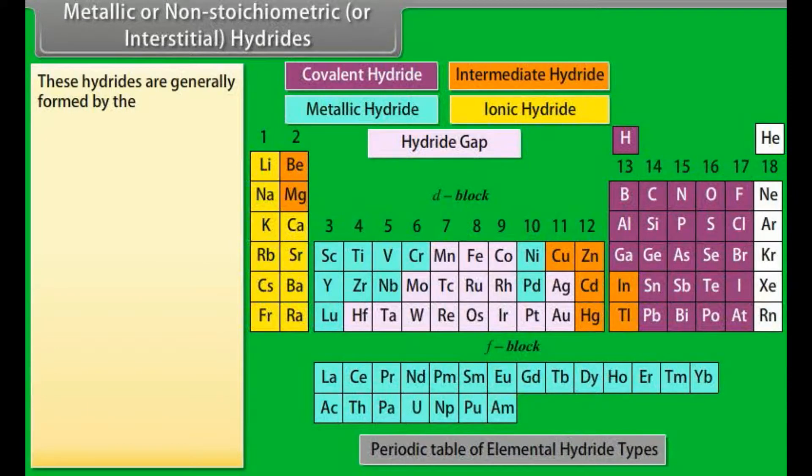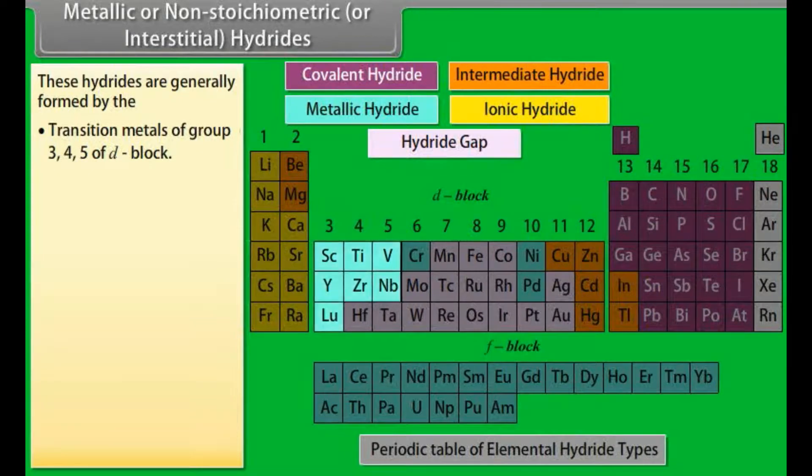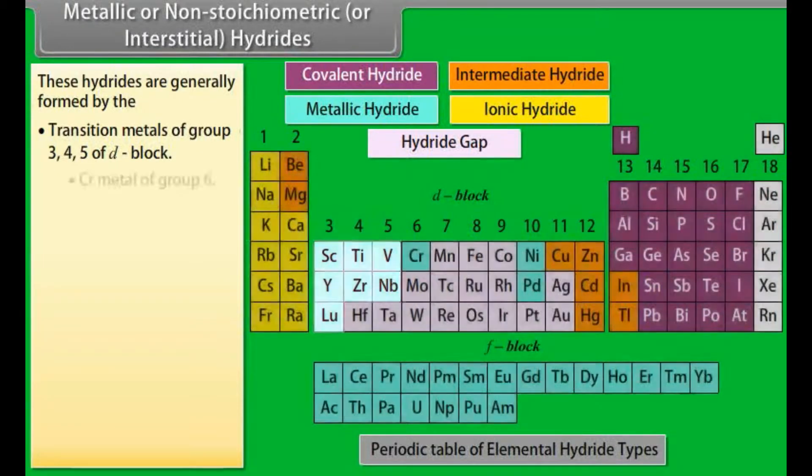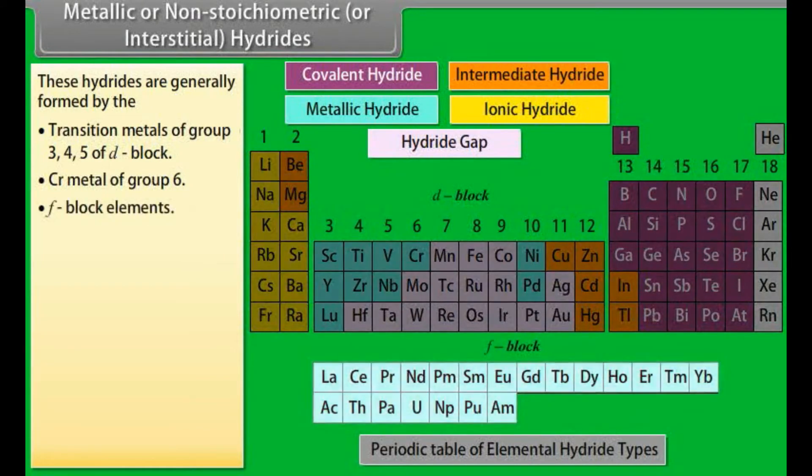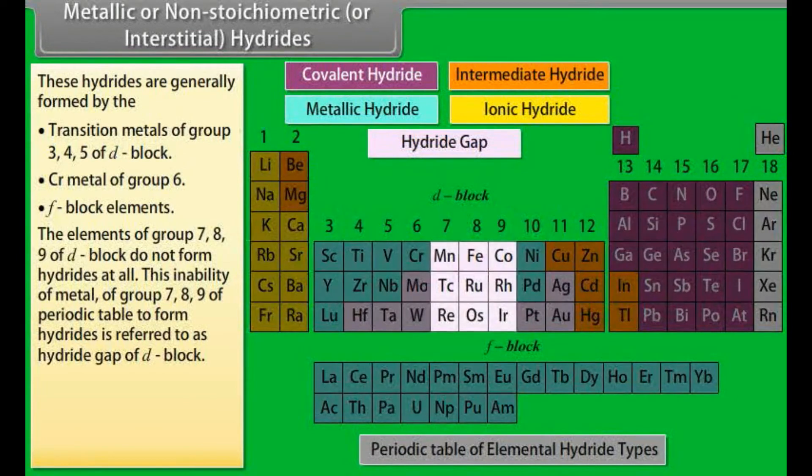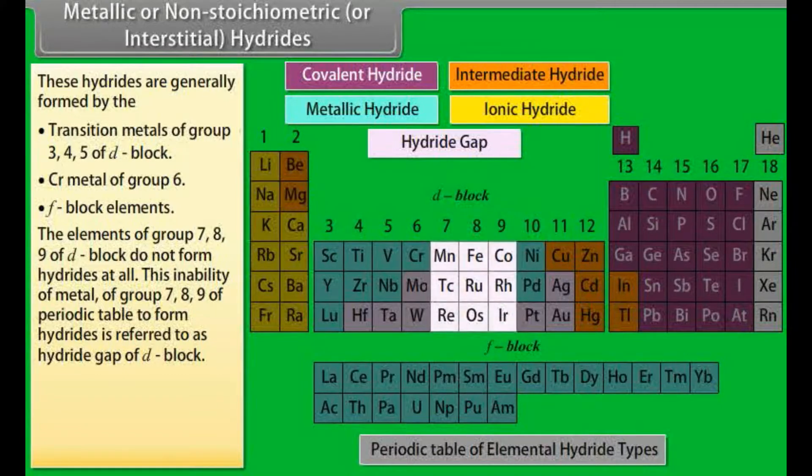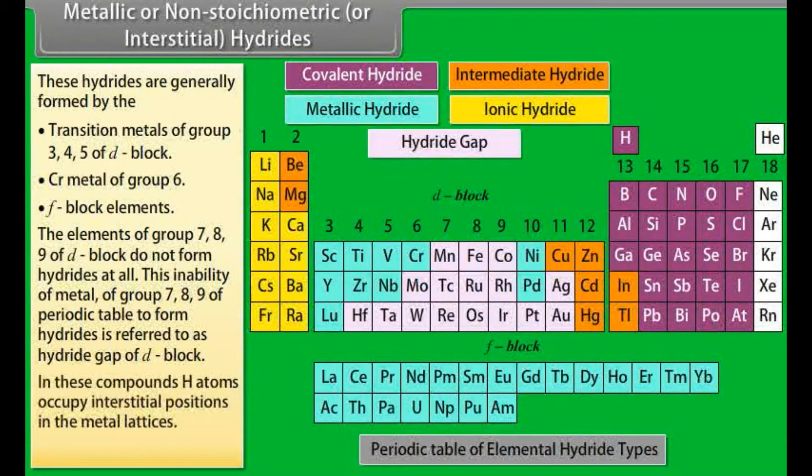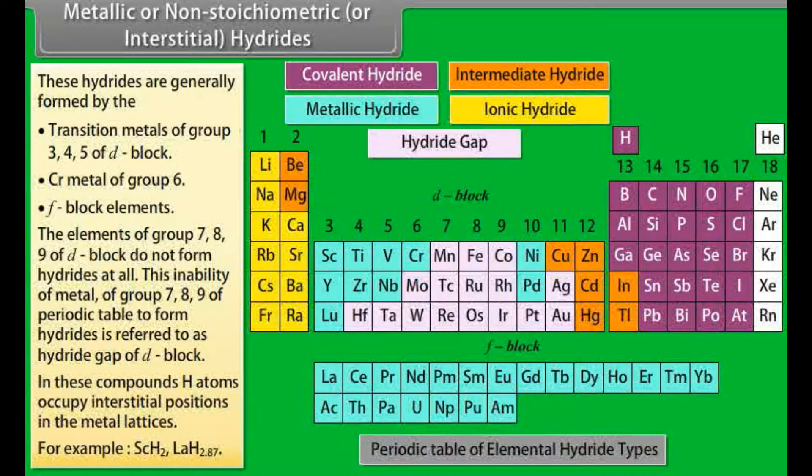Metallic or non-stoichiometric or interstitial hydrides. These hydrides are generally formed by the transition metal of group 3, 4, 5 of D-block, CR metal of group 6, F-block metals. The elements of group 7, 8, 9 of D-block do not form hydrides at all. This inability of metal of group 7, 8, 9 of periodic table to form hydrides is referred to as hydride gap of D-block. In these compounds, H atoms occupy interstitial positions in the metal lattices. For example, ScH2, LaH2.87.